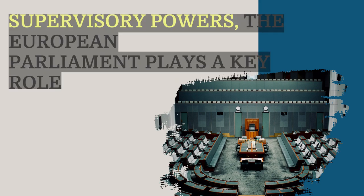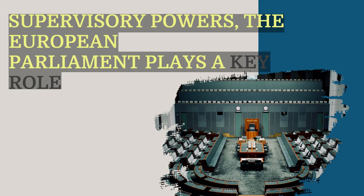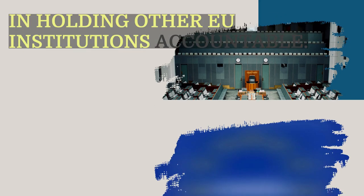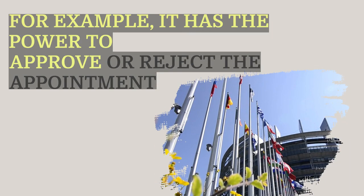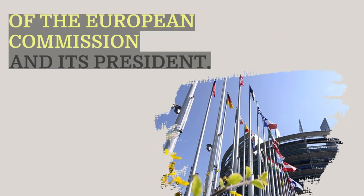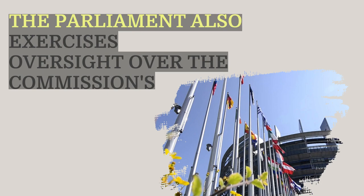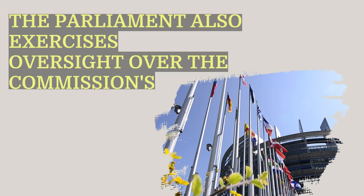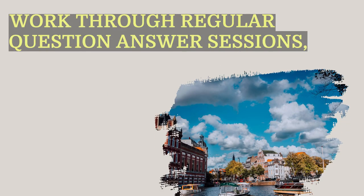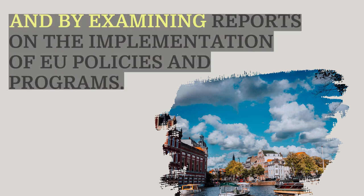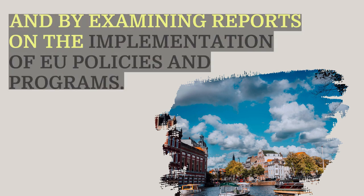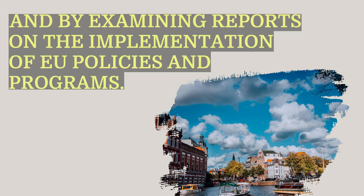Regarding supervisory powers, the European Parliament plays a key role in holding other EU institutions accountable. For example, it has the power to approve or reject the appointment of the European Commission and its President. The Parliament also exercises oversight over the Commission's work through regular question-and-answer sessions, known as Commissioner's Question Time, and by examining reports on the implementation of EU policies and programs.